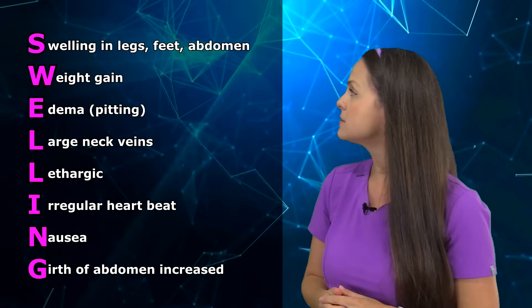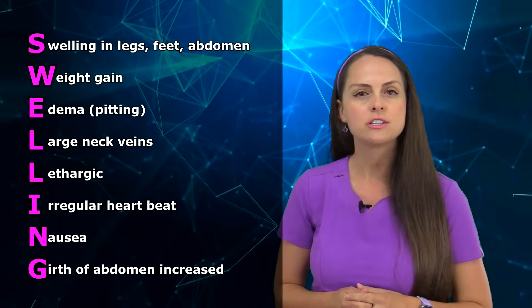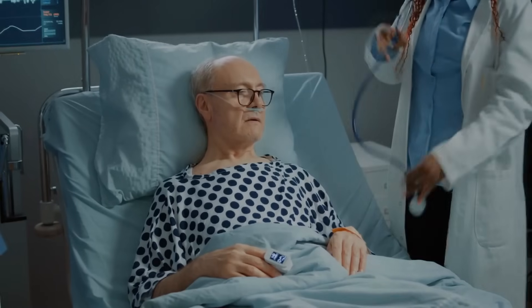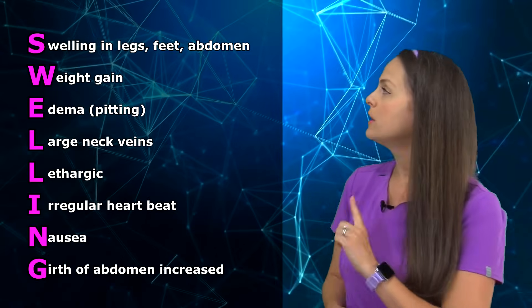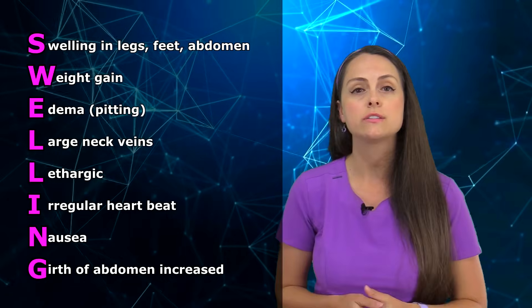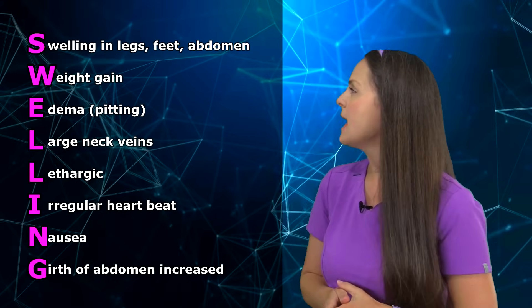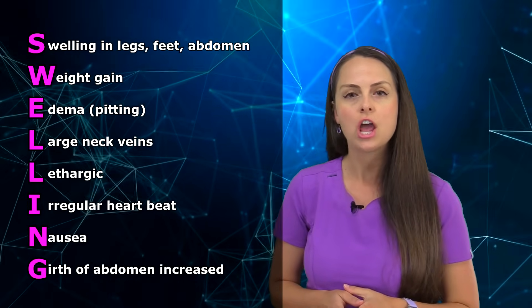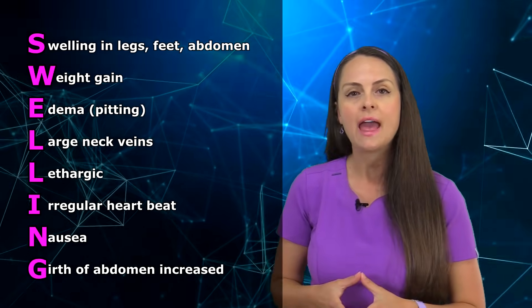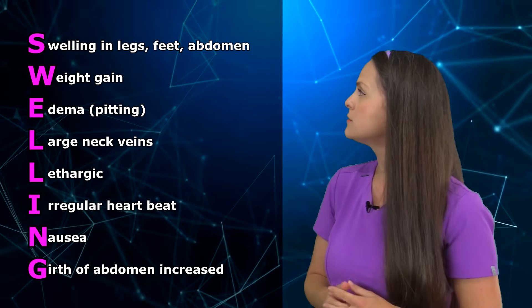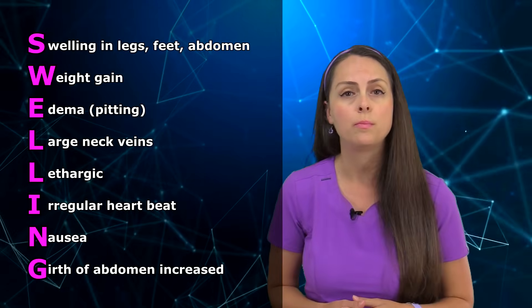And then the other L is for lethargic. These patients will be very weak and tired, and it's because their heart is weak and not able to maintain proper cardiac output. I is for irregular heartbeat. These patients are at risk for atrial fibrillation, so you definitely want to monitor their rhythm, make sure they're not entering into this. N is for nausea. And this happens because we have congestion of our liver, and this pressure is pushing on the abdomen causing them not to really have an appetite and really to feel sick at their stomach.